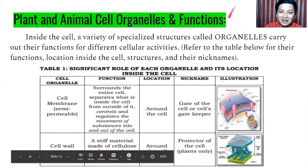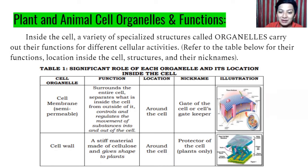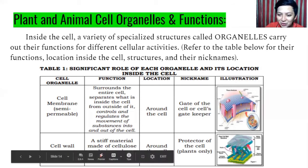Next, we have cell wall. Cell wall is a stiff material made of cellulose. Plant cells have both a cell membrane and a cell wall. It gives shape to plants — a rigid, definite shape. It is found around the cell and acts as the protector of the cell — in plants only.